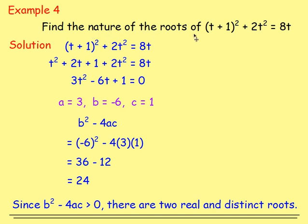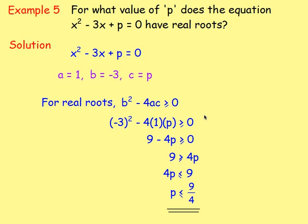A trickier example: find the nature of the roots of (t + 1)² + 2t² = 8t. Multiply out the brackets, take everything to one side, simplify into the form ax² + bx + c = 0. Write down a, b, and c, sub into the discriminant — in this case you get 24. Since b² - 4ac is greater than zero, there are two real and distinct roots.